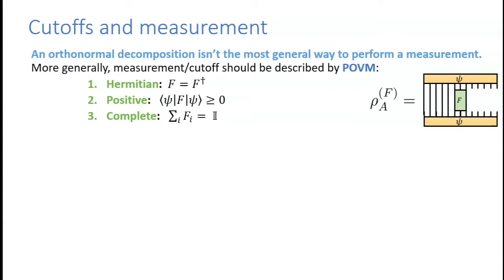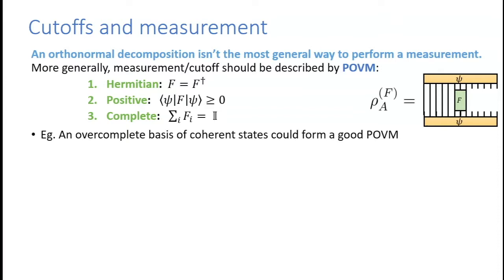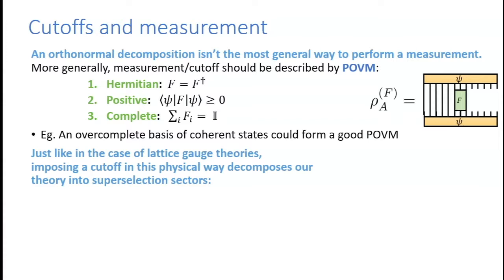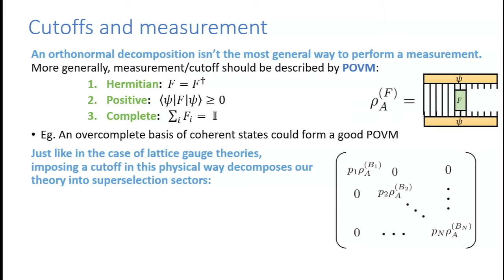An orthonormal decomposition is not the most general way to perform a measurement. More generally, I can think about making a measurement in terms of a POVM: I don't need orthogonal states, I merely need a set of operators that are Hermitian, positive, and complete. For example, to cutoff a conformal field theory, it would be fine to find a set of coherent states — they just need to be a positive resolution of the identity. Imposing a cutoff this way decomposes the theory into superselection sectors, and the entanglement entropy breaks into two pieces: a classical Shannon entropy measuring the entropy of the chosen measurement scheme, and a quantum von Neumann entropy averaging over the superselection sectors.